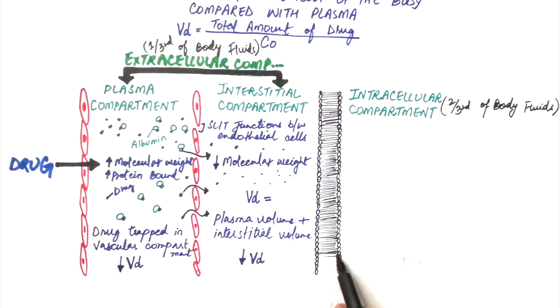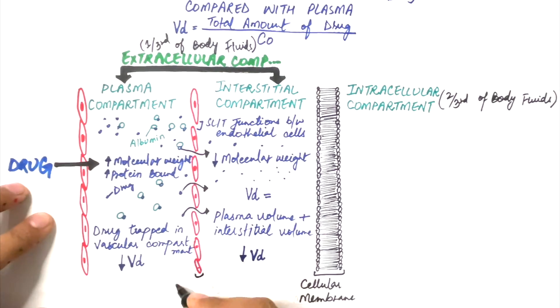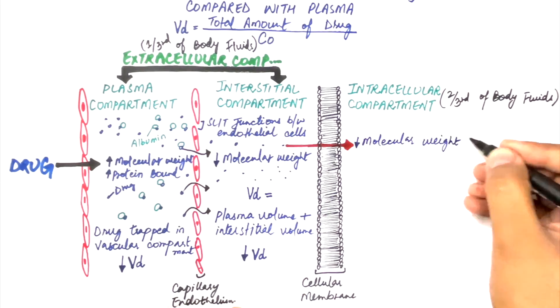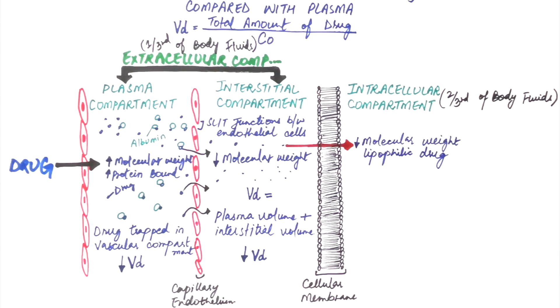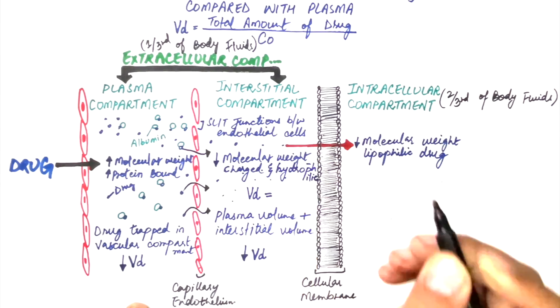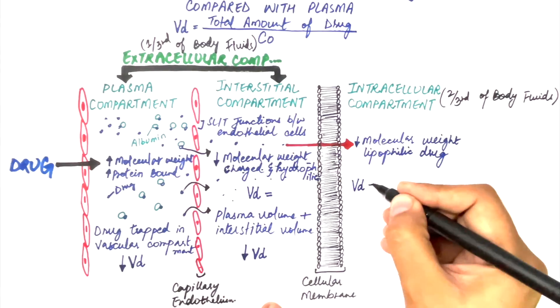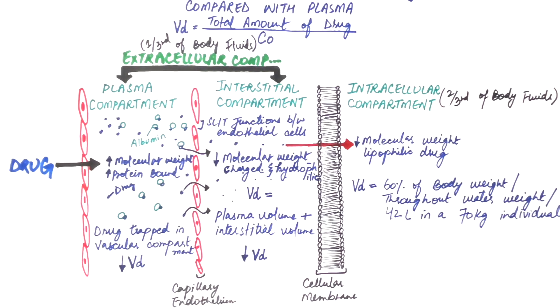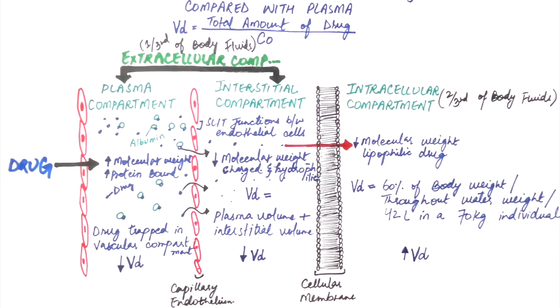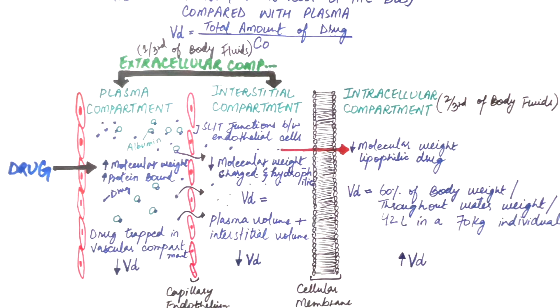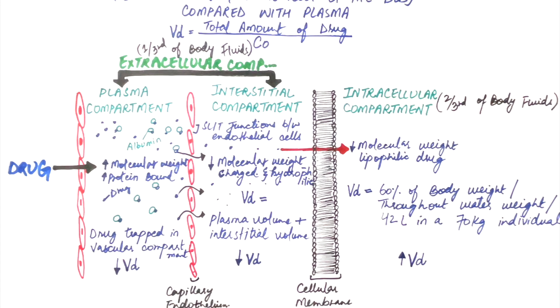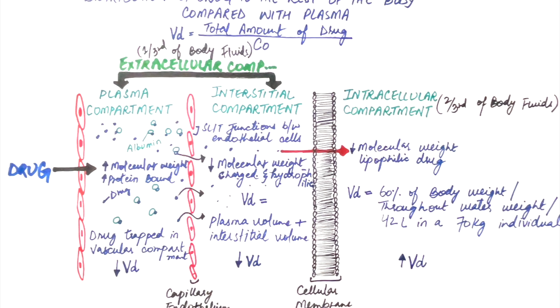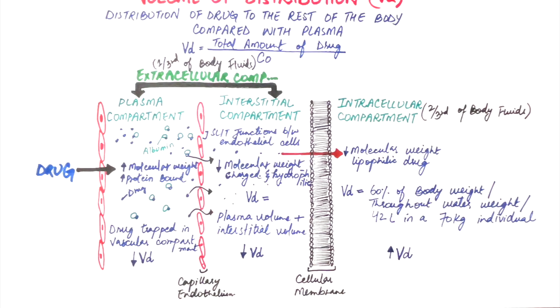If a drug has a small molecular weight and has enough lipophilicity, it can easily pass through the vascular and interstitial compartment into the intracellular compartment by easily passing through the phospholipid bilayer. So the drug will distribute into a volume of about 60% of body weight, that is throughout the water weight of an individual, or about 42 liters in a 70 kg individual. Hence, we have understood that a large volume of distribution indicates greater distribution into tissues, whereas a smaller volume of distribution suggests confinement of drug to plasma or extracellular compartment.